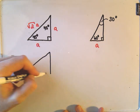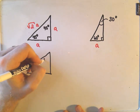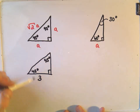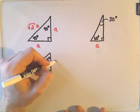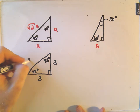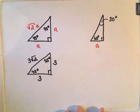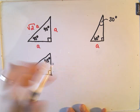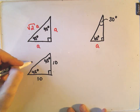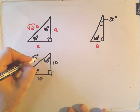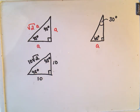For example, suppose we have a 45-45-90 triangle and this side has length 3. By default that makes the other leg also 3, and to get the hypotenuse you simply multiply that length by the square root of 2 — giving 3√2. Likewise, if this had length 10, this side would also have length 10, and the hypotenuse would simply have a length of 10√2.